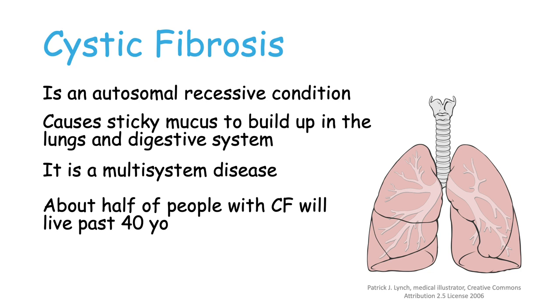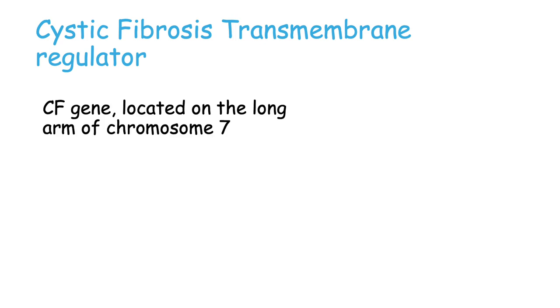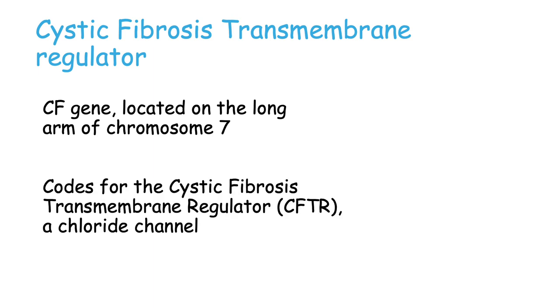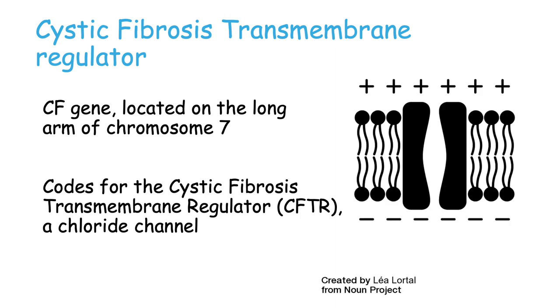To understand the disease, we first need to talk about the protein that it affects. This is the cystic fibrosis transmembrane regulator. The cystic fibrosis gene is located on the long arm of chromosome 7 and it codes for the cystic fibrosis transmembrane regulator, or CFTR, which is a chloride channel.